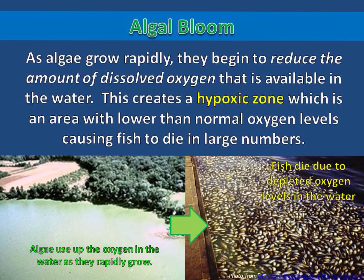As algae grow rapidly, they begin to reduce the amount of dissolved oxygen that is available in the water. This creates a hypoxic zone, which is an area with lower than normal oxygen levels causing fish to die in large numbers.